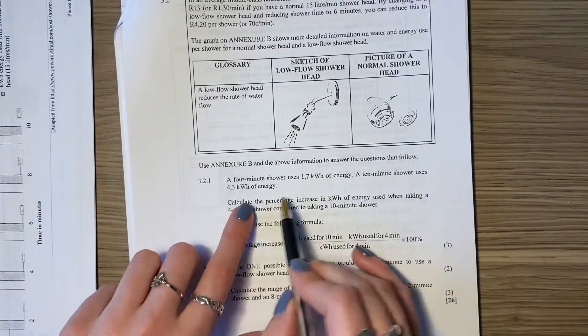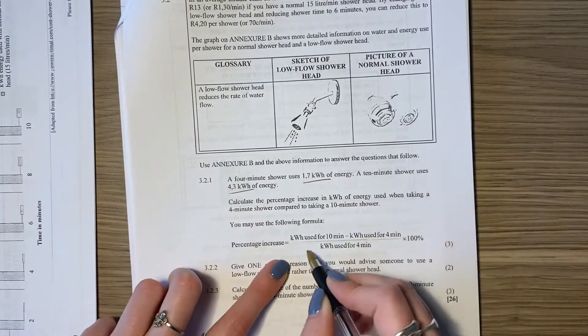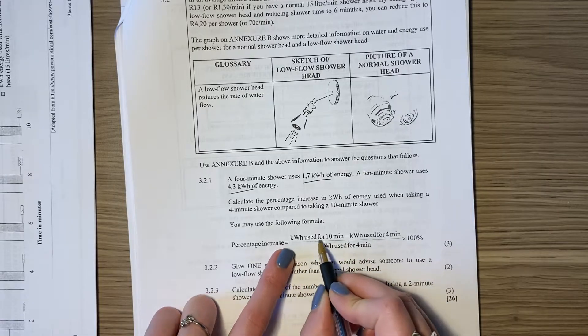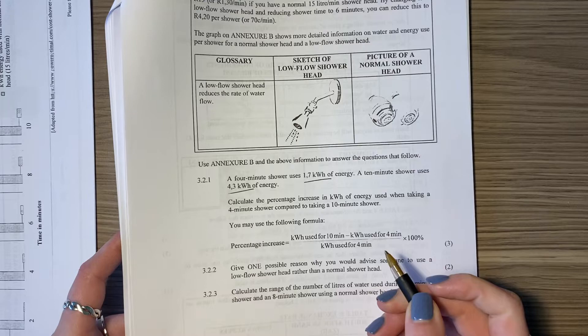Over here we don't actually need to use Annexures, because they've given us our amounts, and they've also very kindly given us this formula. So kilowatts used for 10 minutes, kilowatts used for four minutes, they've been so kind.